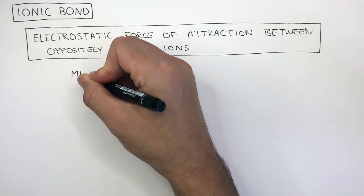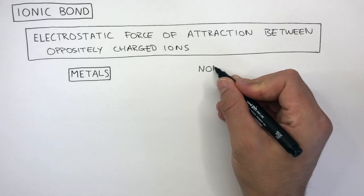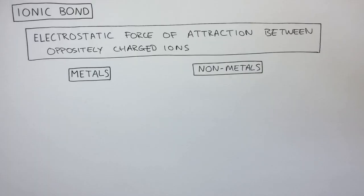An ionic bond is always between a metal and a non-metal. So if you ever see a chemical substance containing a metal and a non-metal, you're dealing with ionic bonding.